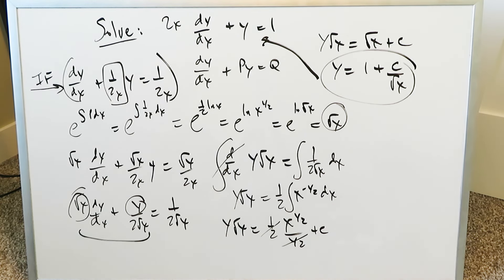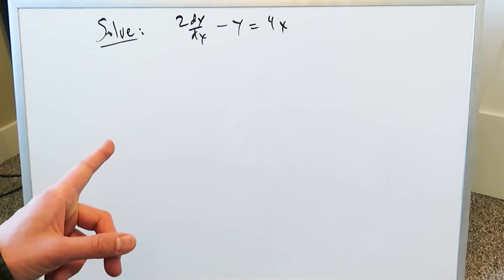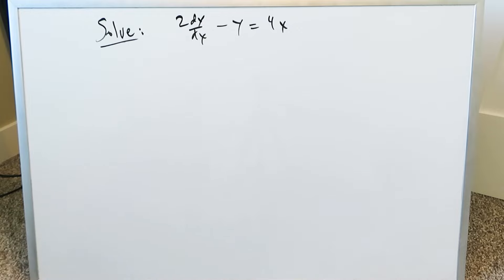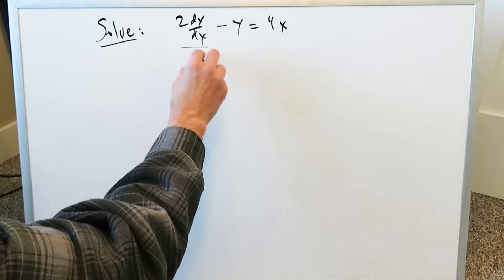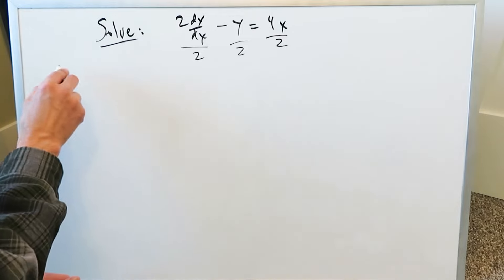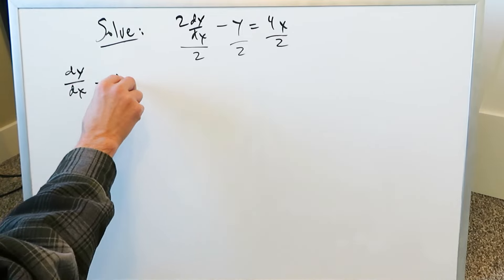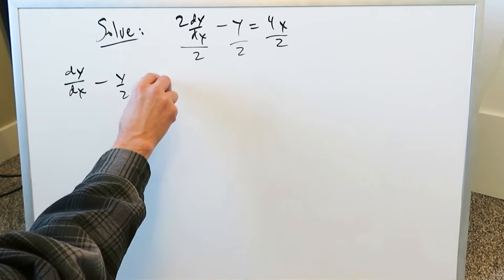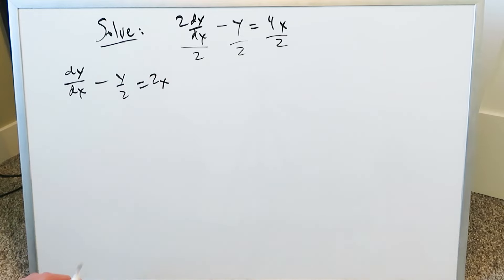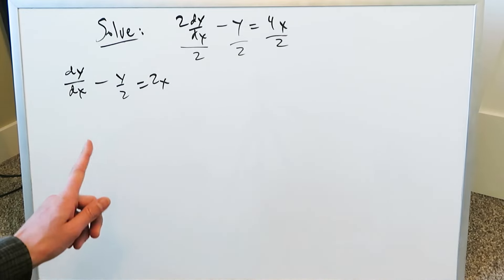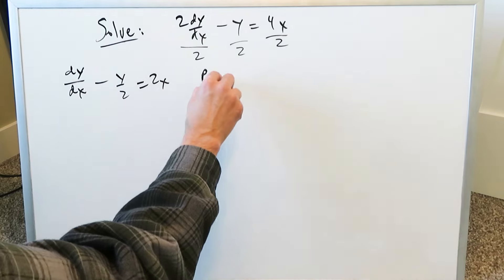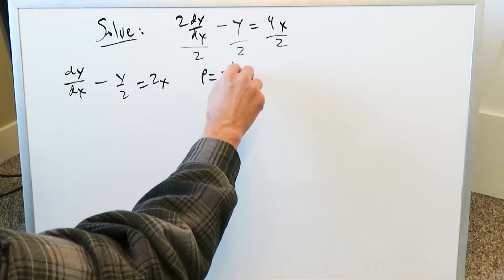The next two questions will be slightly more tricky and a little difficult. The next question is: 2 dy/dx minus y equals 4x. We start by dividing everything by 2 to convert it into the standard form. That gives dy/dx minus y over 2 is equal to 2x. Now you can clearly see your p value: p is equal to minus 1 over 2.